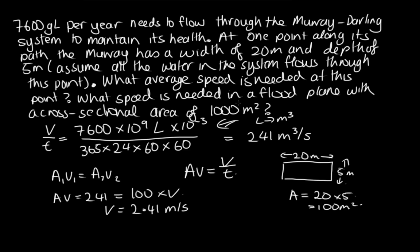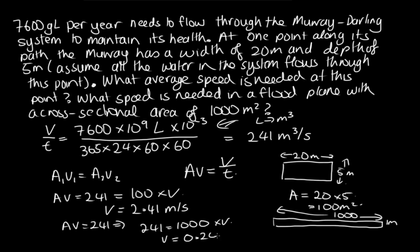So then it asks us how fast would it flow if it went into a flood plain with an area of 1,000 meters squared. So that would be a very small flood plain. So that's just the cross-sectional area that could be, say, a kilometer wide and a meter deep is one possible configuration. But in that case, we just use again Av. The cross-sectional area times the speed is equal to 241. But in this case, A is 1,000. So we've got 241 is equal to 1,000 times v. And so the speed, in this case, is equal to 0.241 meters per second. So much slower flowing. Which is why rivers slow down when they come to a flood plain.